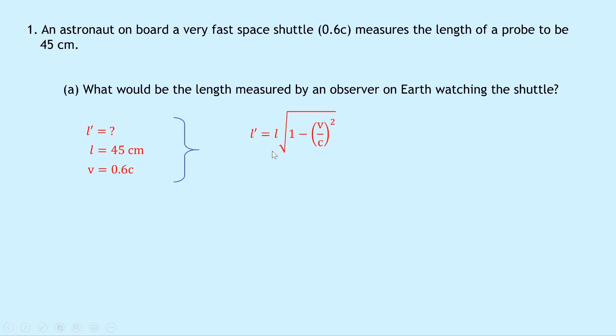Substituting in the numbers we get 45 times square root of 1 minus 0.6C over C squared and notice that the C terms on the top and bottom of our fraction will cancel out. You can then put that into your calculator and I'd recommend doing the 0.6 squared first and then the 1 minus that and then the square root of that to get an answer of 36 centimeters.